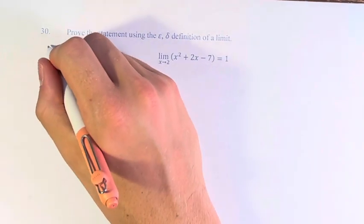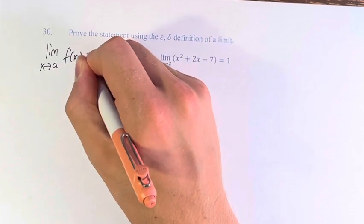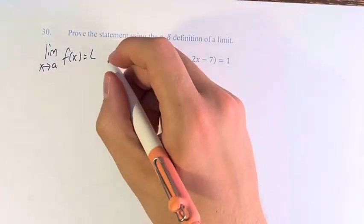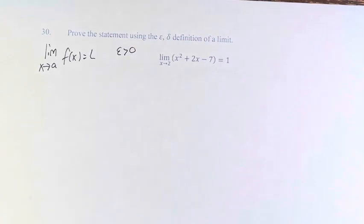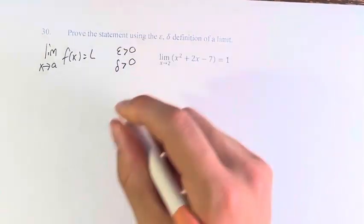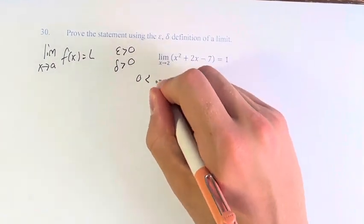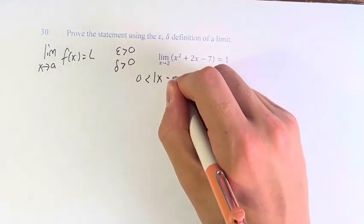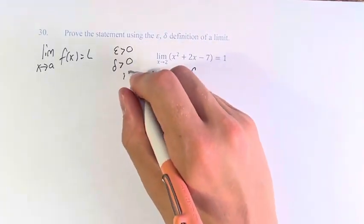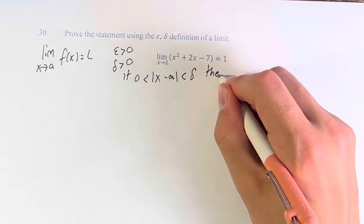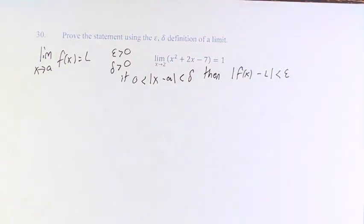The precise definition of a limit states that the limit as x approaches a of f of x equals L if, for any epsilon greater than 0 that you could pick — any positive number — there is an associated positive number delta such that 0 is less than the absolute value of x minus a is less than delta. If this is true, then the absolute value of f of x minus L is less than epsilon.